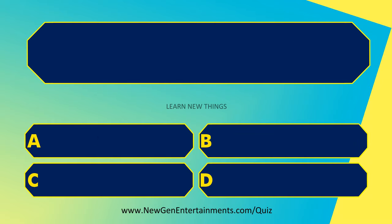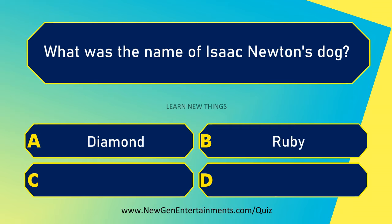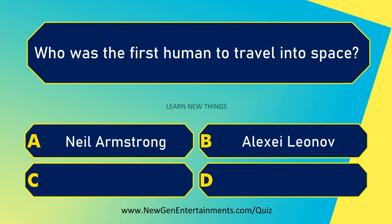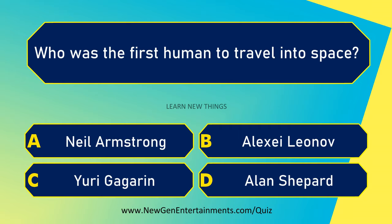What was the name of Isaac Newton's dog? Diamond. Who was the first human to travel into space? Yuri Gagarin.